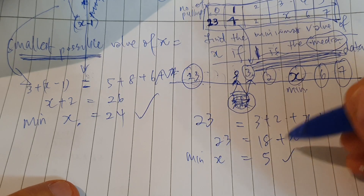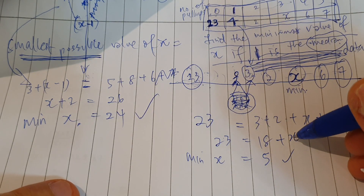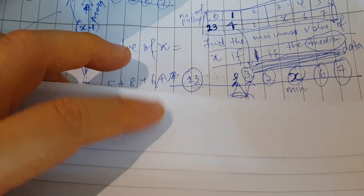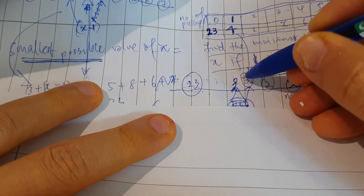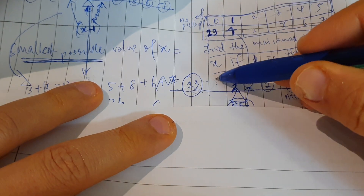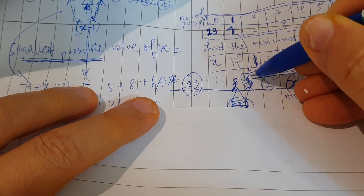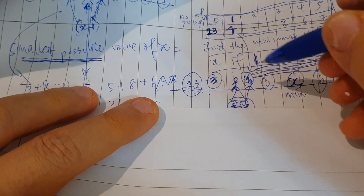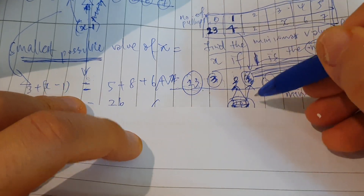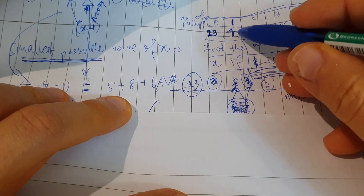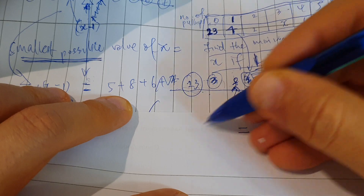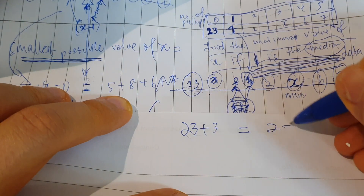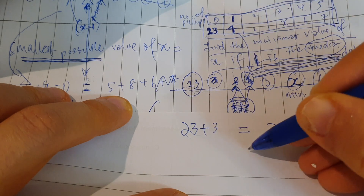So 23 equals 18 plus x, giving minimum x equals 5. Now let me show the wrong working for comparison: if you put those three on the left, you get 26 on the left versus 15 plus x on the right, giving x equals 11. Comparing both, x equals 5 is the minimum and x equals 11 would be the maximum.